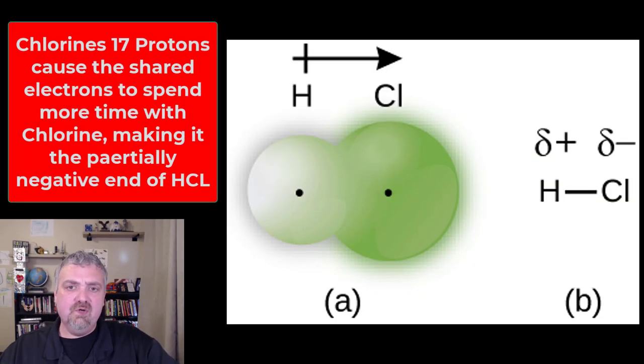Another example here would be hydrogen chloride. So chlorine has 17 protons, hydrogen has one. So the negative electrons are going to be way more attracted to the chlorine side of this bond. So yes, they're still sharing, but hydrogen is going to have the partial positive end because the negative electrons are being pulled away from it more often than not. Chlorine is going to have the partial negative end.